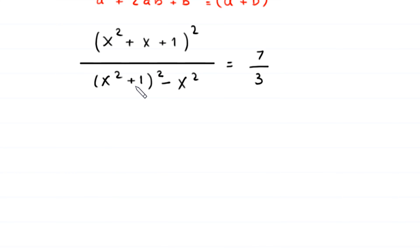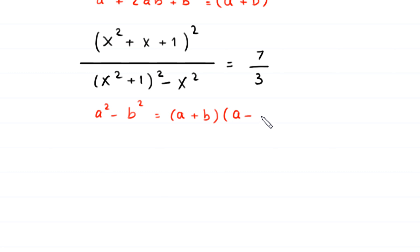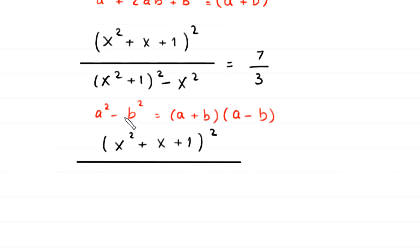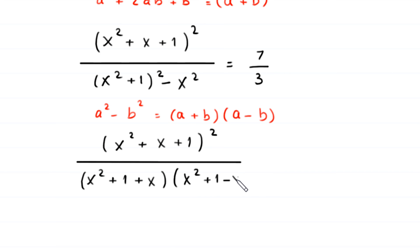In the denominator we have a difference of two squares, so we use the identity a² − b² = (a + b)(a − b). This expression becomes (x² + 1 + x)(x² + 1 − x), giving (x² + x + 1)² divided by (x² + x + 1)(x² − x + 1) equal to 7 over 3.